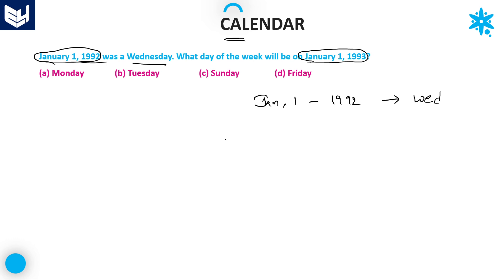If you observe carefully, there is no change in date — we are simply talking about the next year. So, 1992 January 1st is Wednesday, and we need to find which day 1993 January 1st will be.